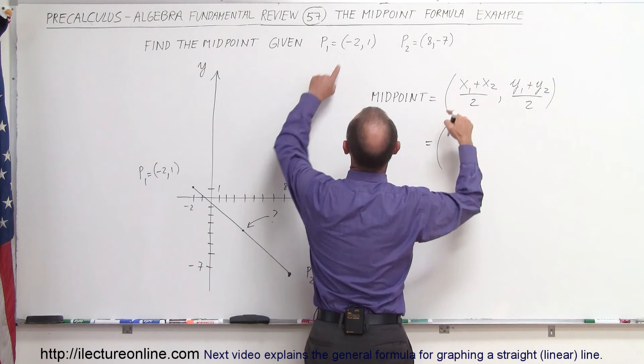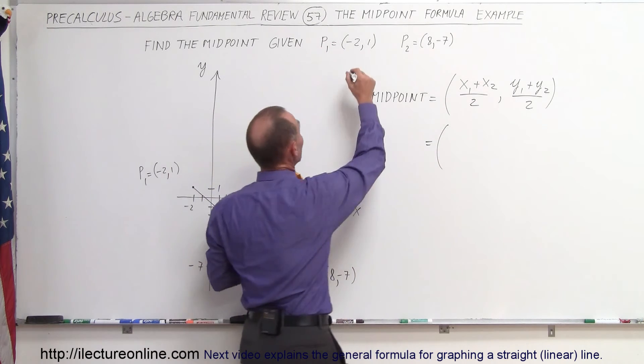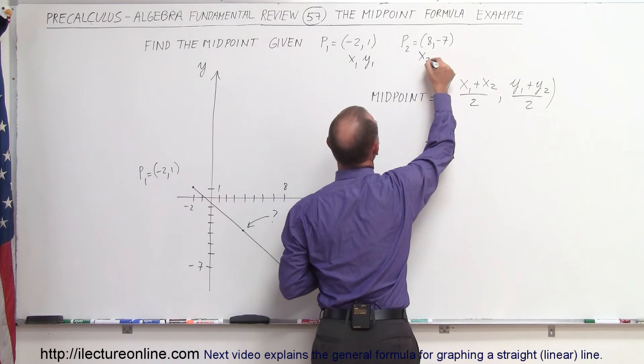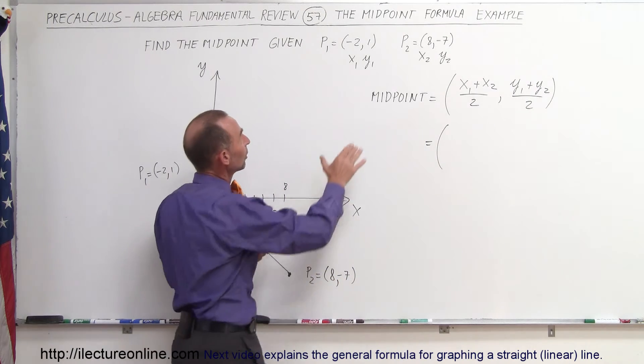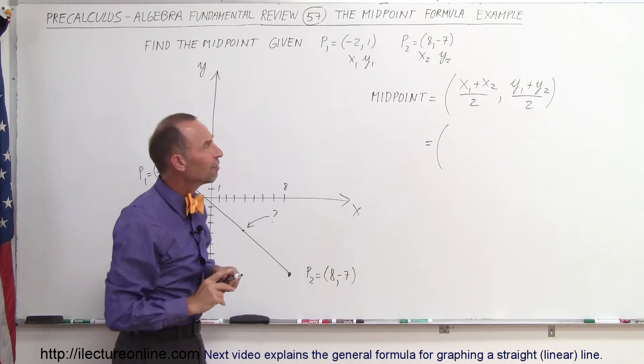This is equal to x1 plus x2 over 2. So to avoid making mistakes, it's always a good idea to label these points. This is x1 and y1, this is x2 and y2. And it doesn't matter which way you label those, you can label this as point 2 and label that as point 1, and you'll get the exact same value.